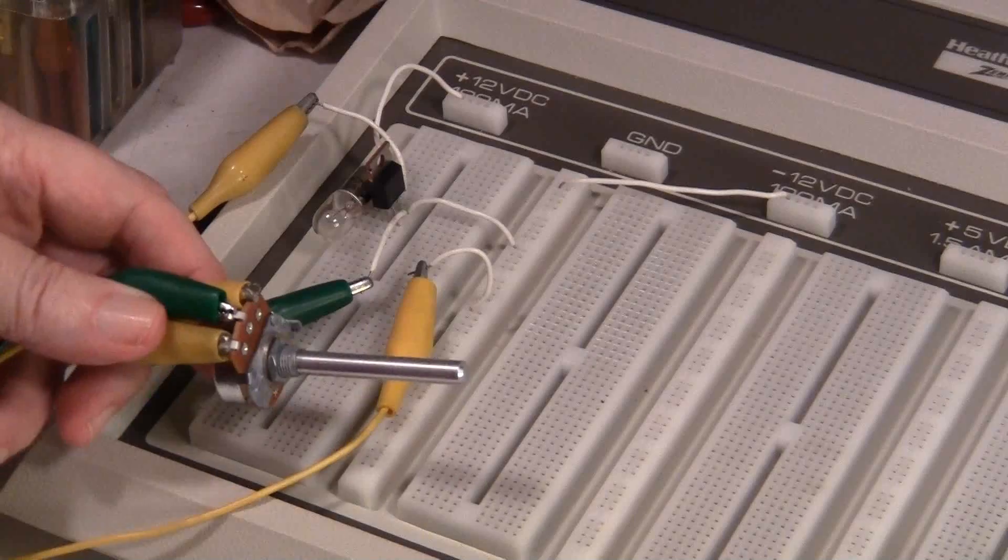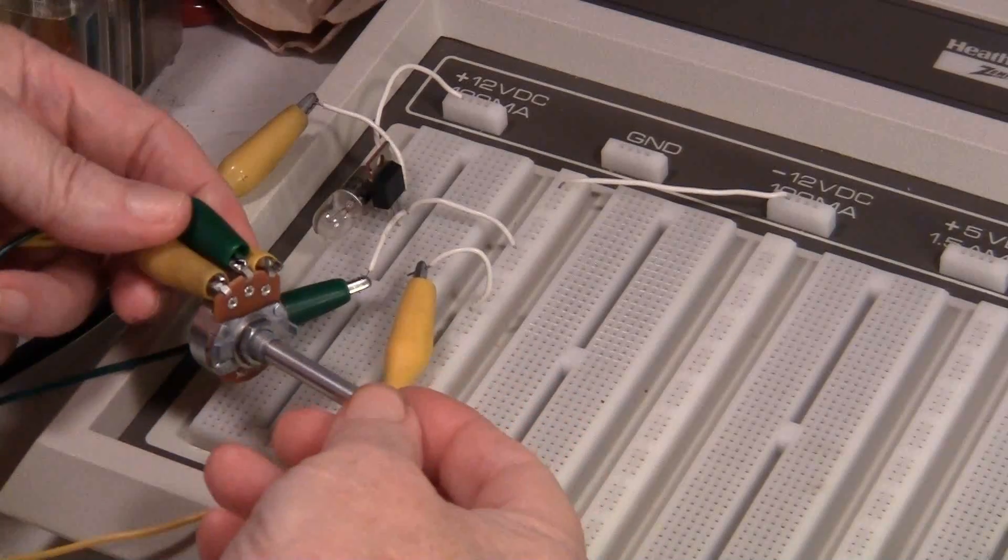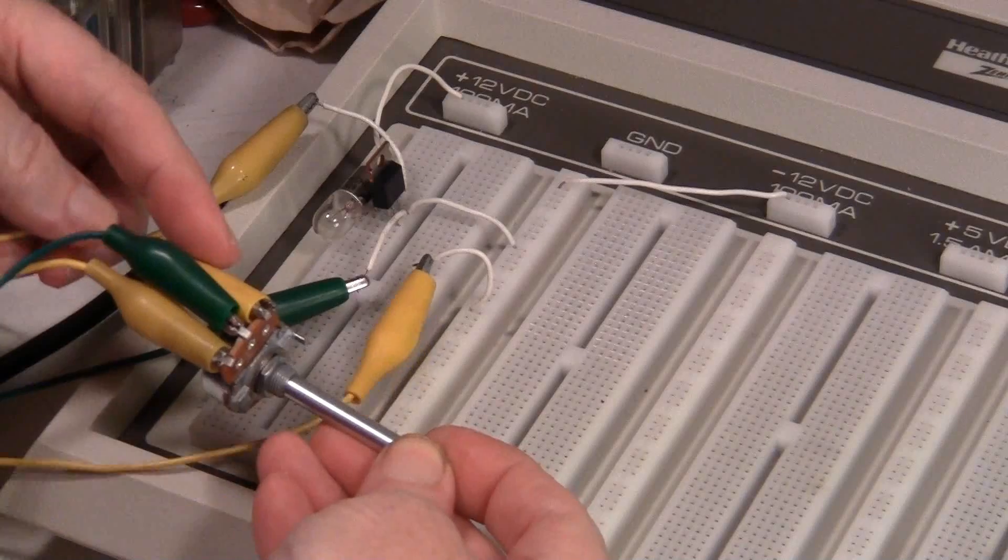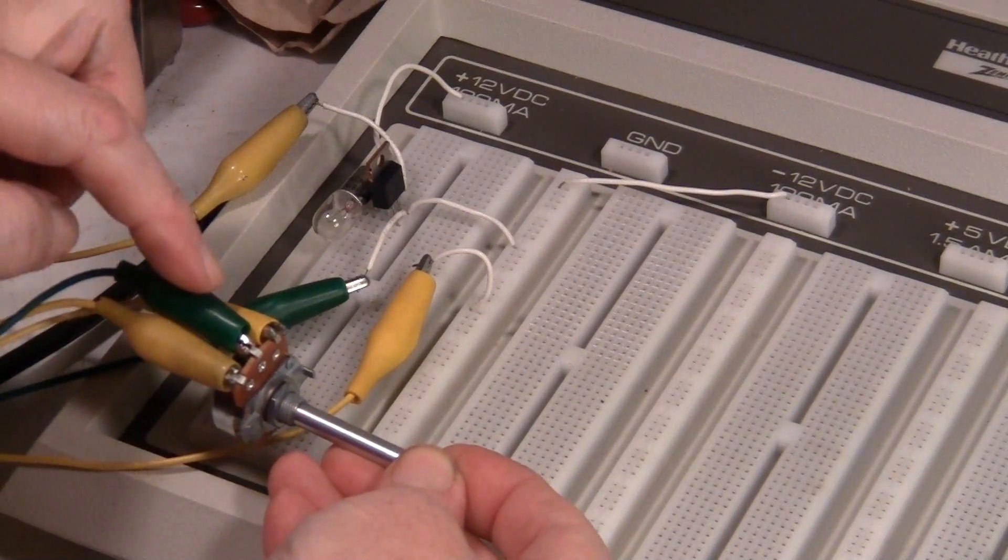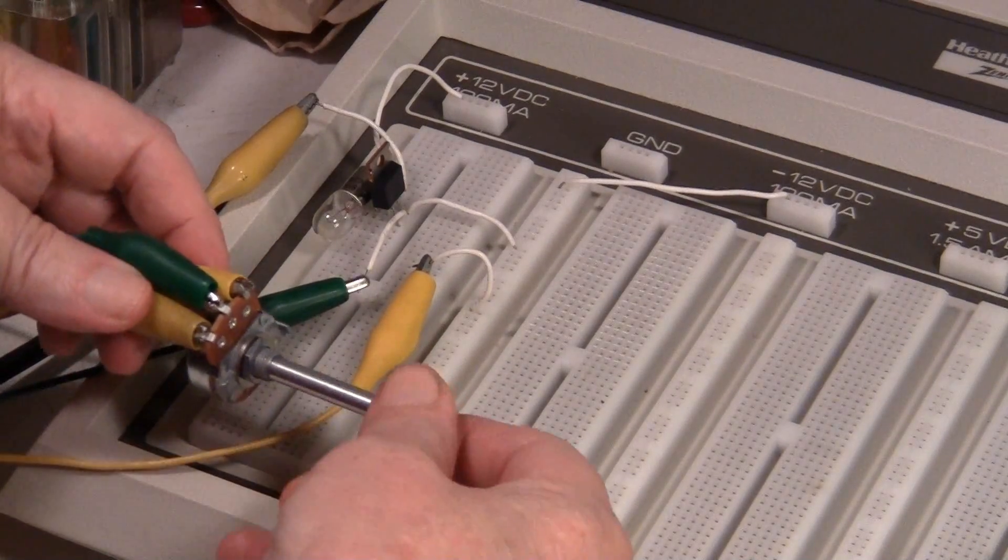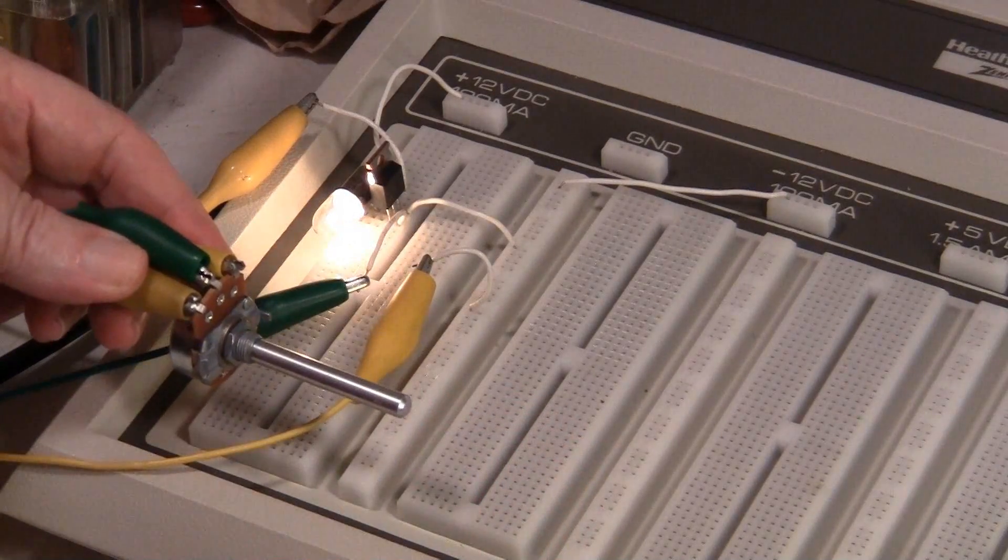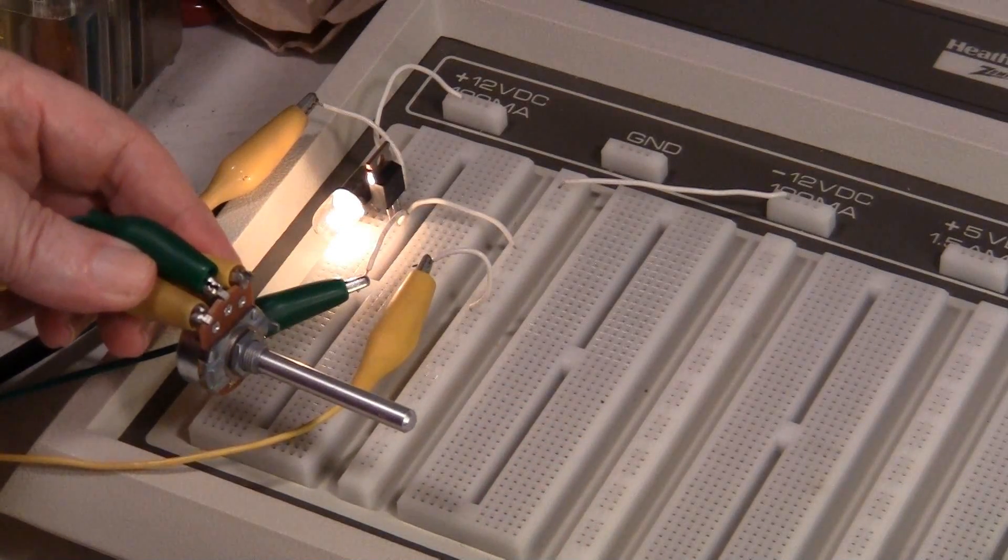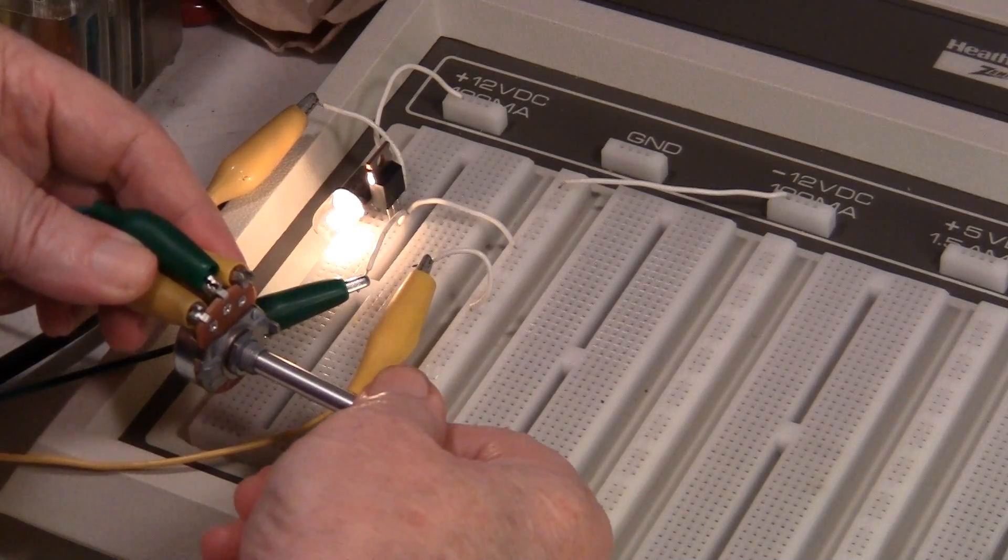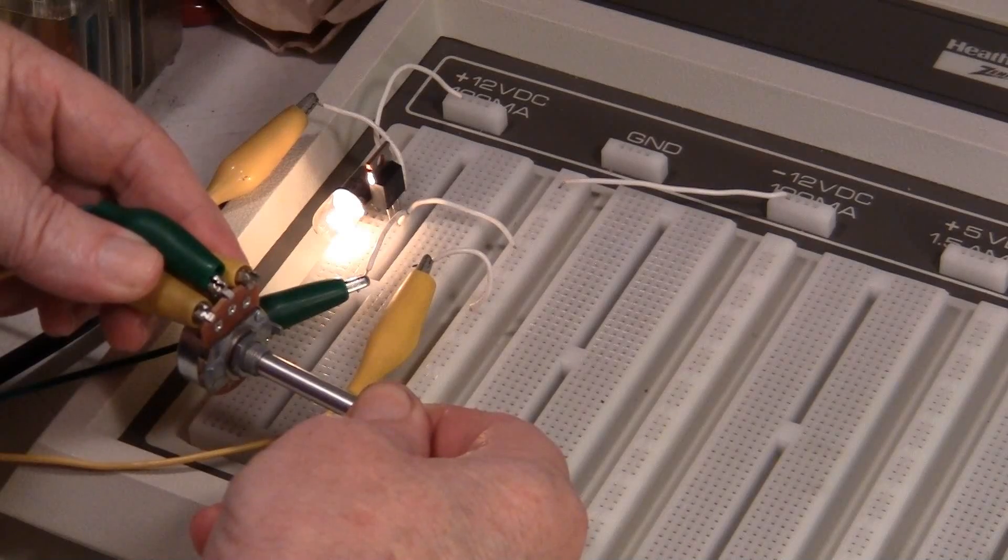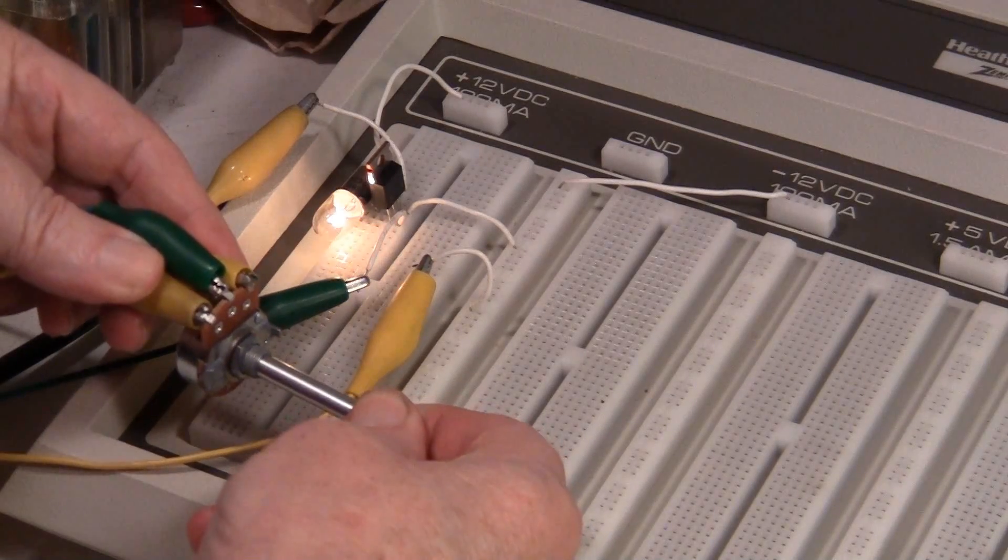Okay, now I've got this variable resistor hooked up to it. Positive on this side, ground on that side, and the gate is right in the center. I've got it all the way down. If I go all the way up, the light comes on. And then somewhere in the middle, we'll have some control over this. There we go.